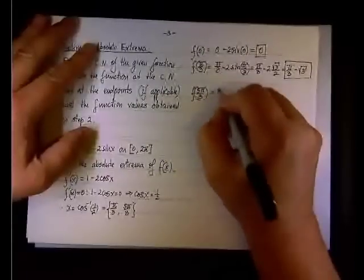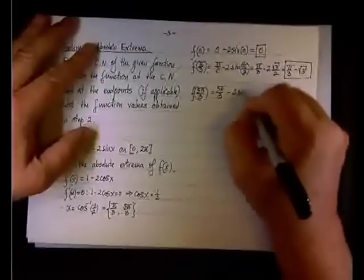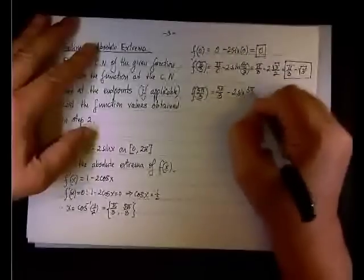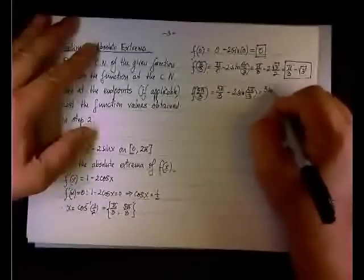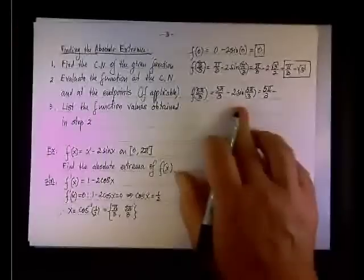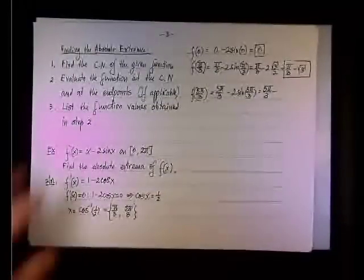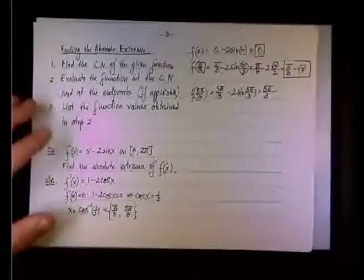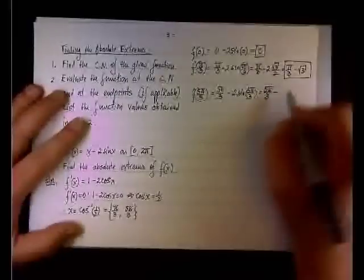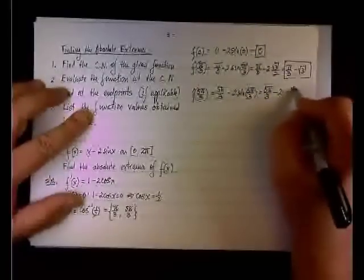Next, let's evaluate for five pi over three. So it will be five pi over three minus two sine of five pi over three. Now look at five pi over three. This is in quadrant four. The sine is negative in quadrant four. The cosine is positive there, but the sine is negative. So it will be minus two times the negative square root of three over two.